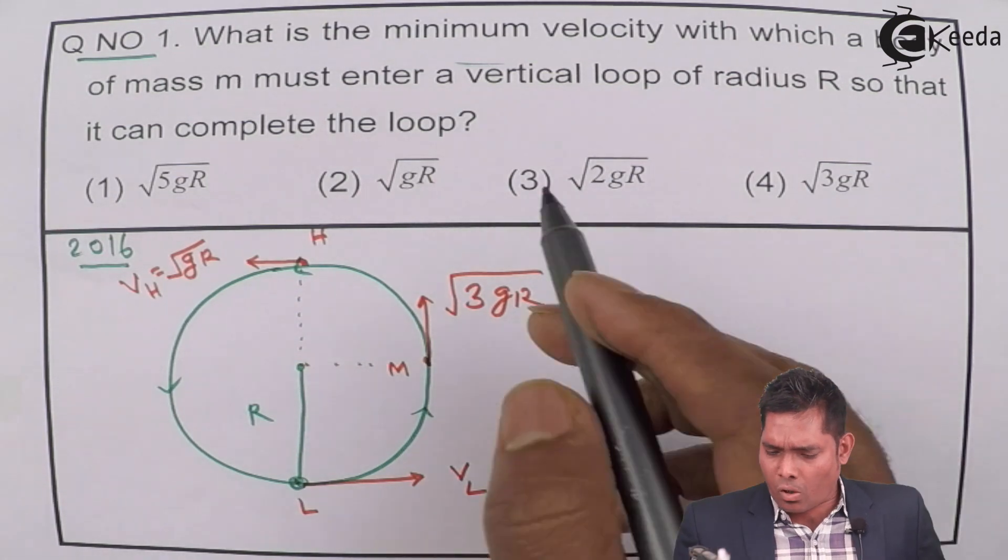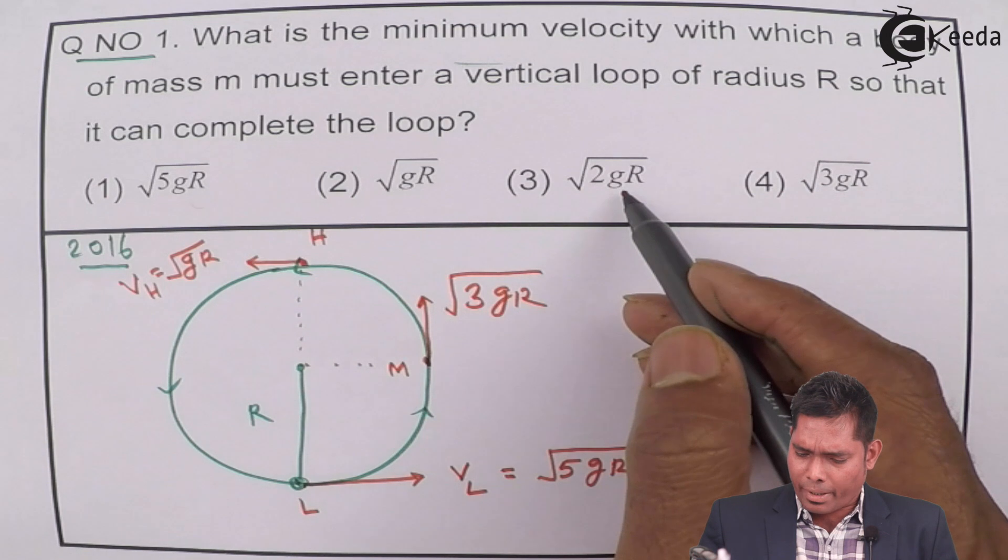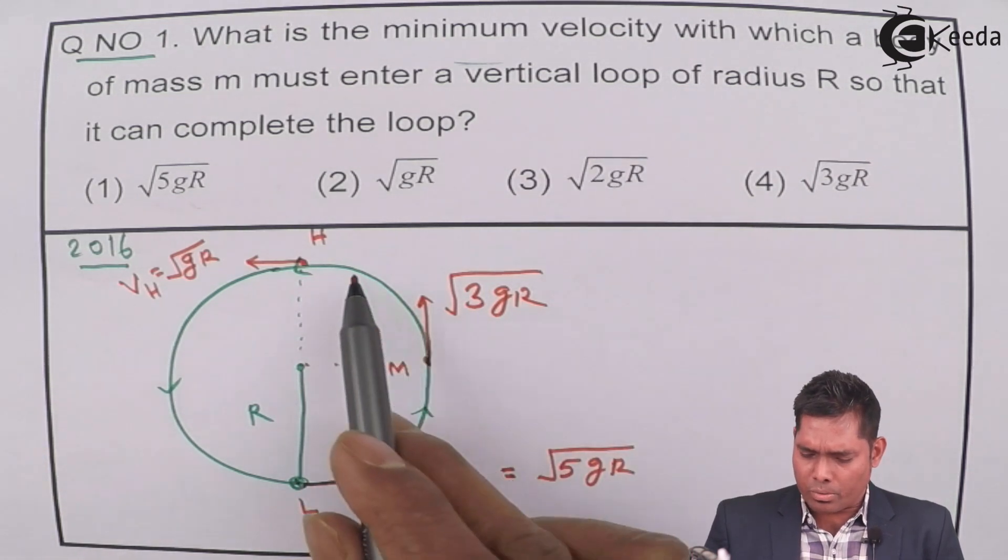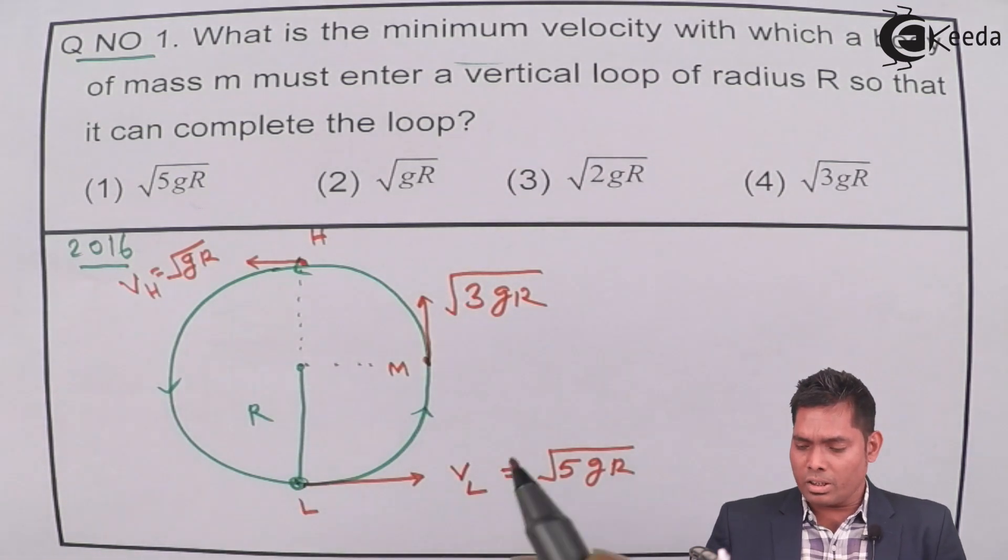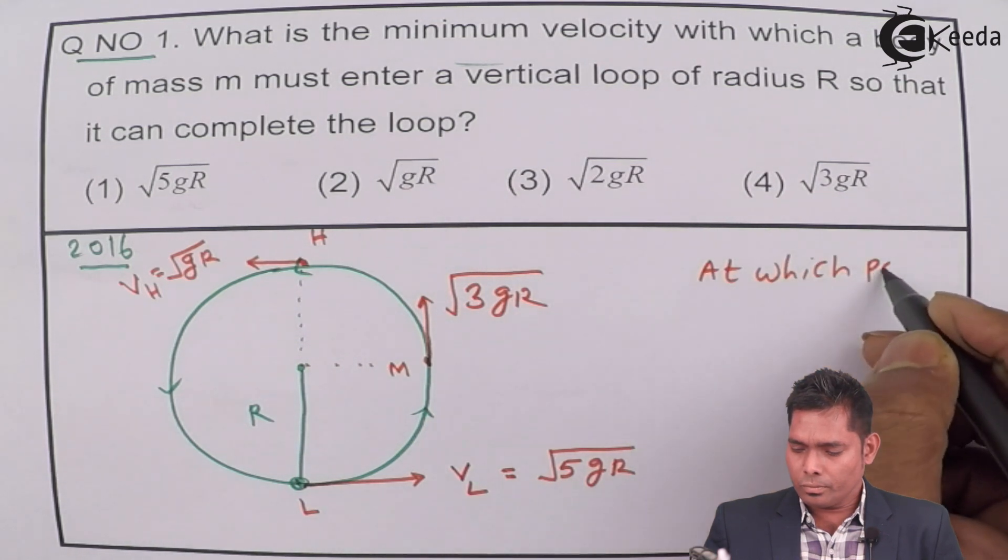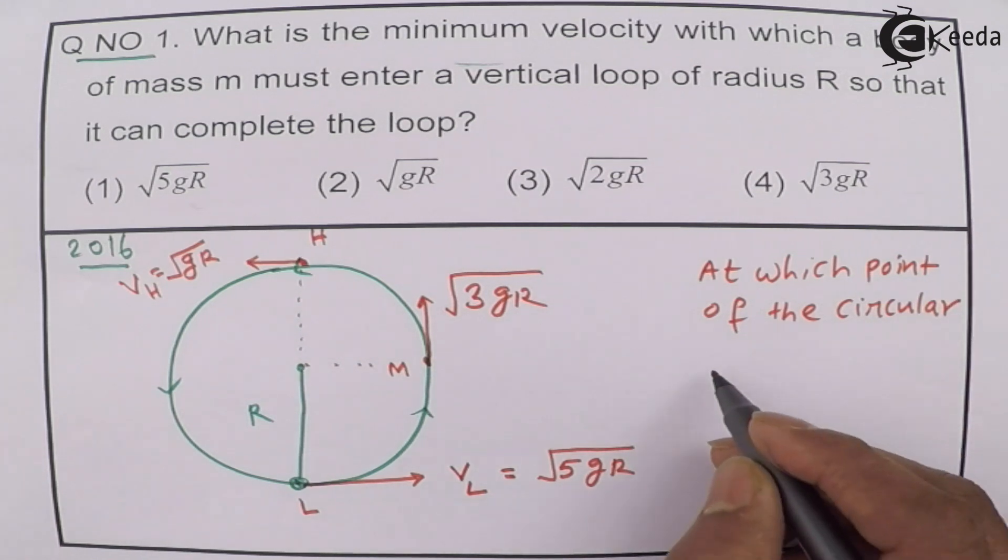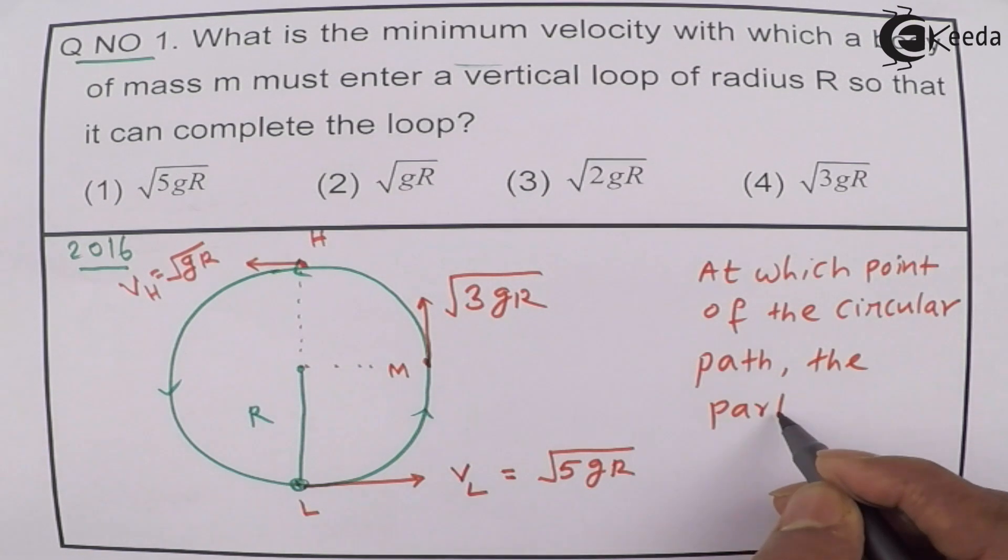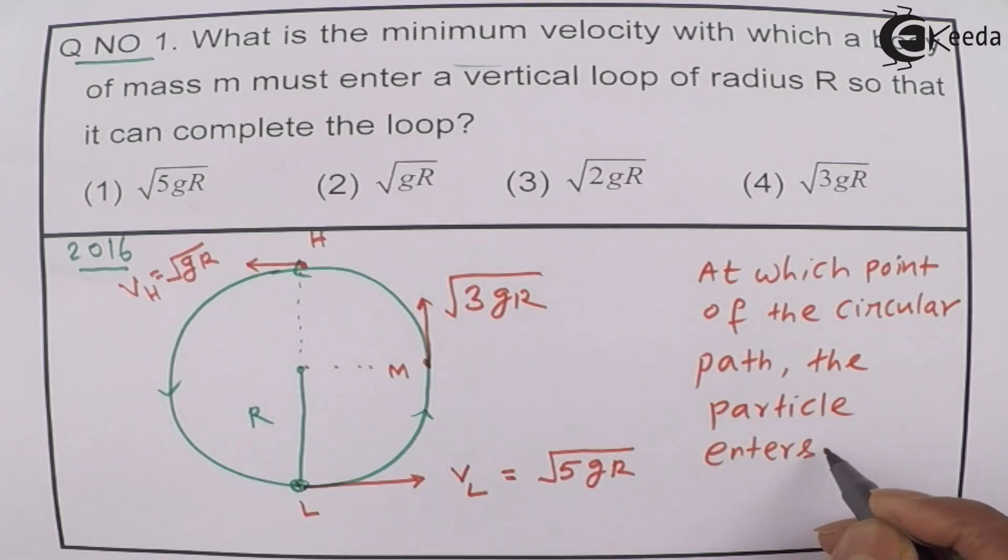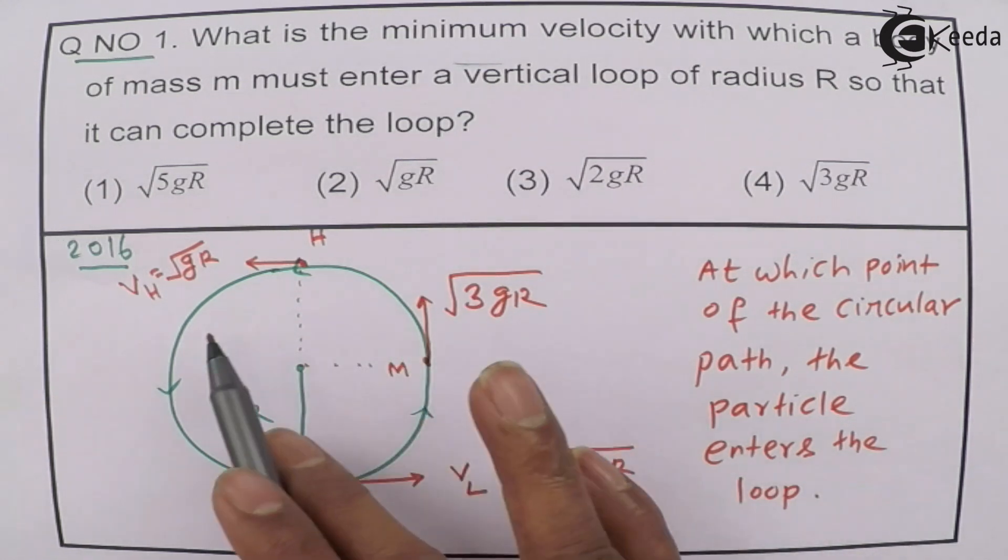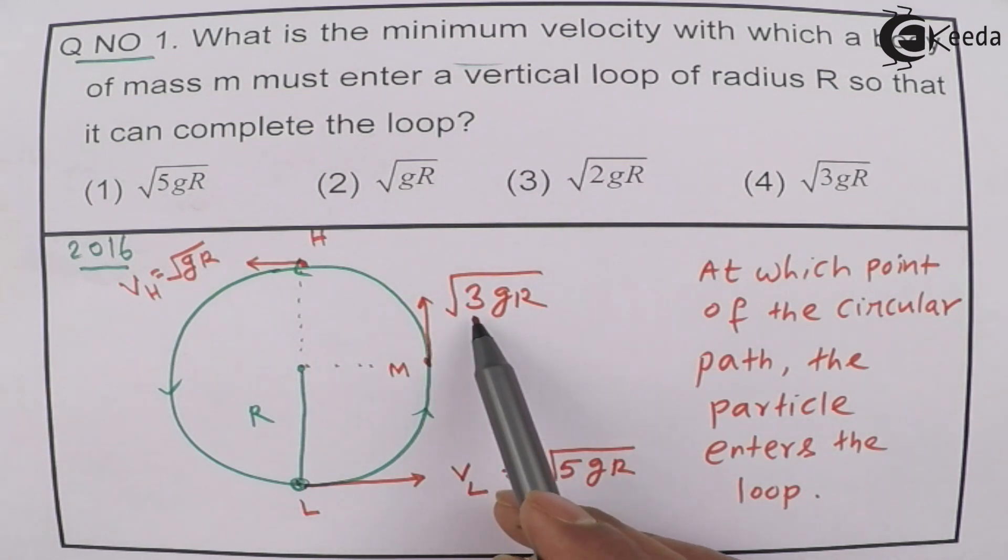So, at the midpoint, we require velocity equals to √(3GR). So, that means, if I see all the options are correct, and 2GR might be somewhere here. It might be somewhere here. Because the speed goes on decreasing as we move from here to here. At the lowest point, if the body, so the question is, at which point of the circular path the particle enters the loop. If the particle enters the loop at this point, then this much of velocity is provided. Then only it will complete the loop. If it enters at the midpoint, this much of velocity has to be provided. So, this will be the answer then.